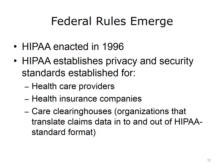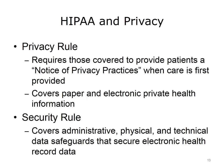HIPAA was enacted in 1996 by the federal government. HIPAA establishes privacy and security standards, and requires that healthcare providers, insurance companies, and care clearinghouses — organizations that translate claims data into and out of HIPAA standard format — abide by privacy and security standards. The HIPAA privacy rule requires covered entities to provide patients with a notice of privacy practices when care is first provided, such as when visiting a walk-in clinic. The privacy rule covers both paper and electronic private health information. HIPAA also incorporates a security rule that goes further than the privacy rule, covering administrative, physical, and technical data safeguards that must be enacted to secure EHR data. All of these should be outlined in the entity's security policy.